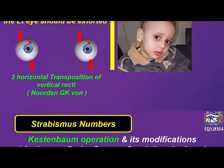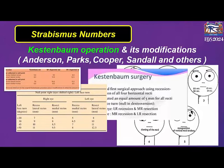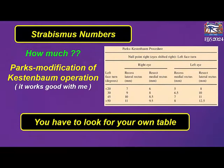As we all know, each type of strabismus has its own numbers and its own tables. In null point nystagmus, there are many tables and many modifications. For me, Park's modification of the Kestenbaum operation — this table works well for me. But as I always advise, please look for your own table.